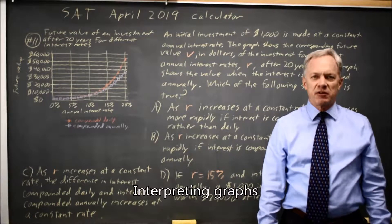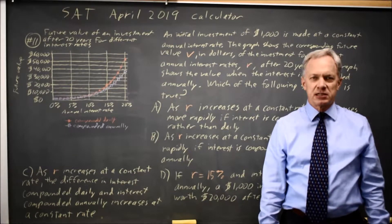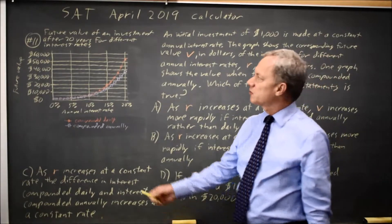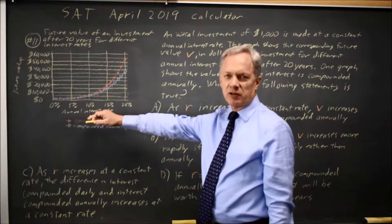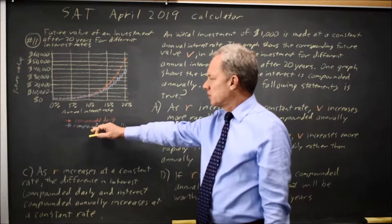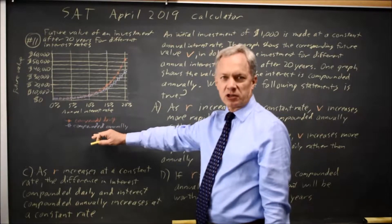This is calculator question number 11 from the April 2019 SAT. College Board gives us a graph for the future value of an investment after 20 years, showing either compounded daily or annual compounding.